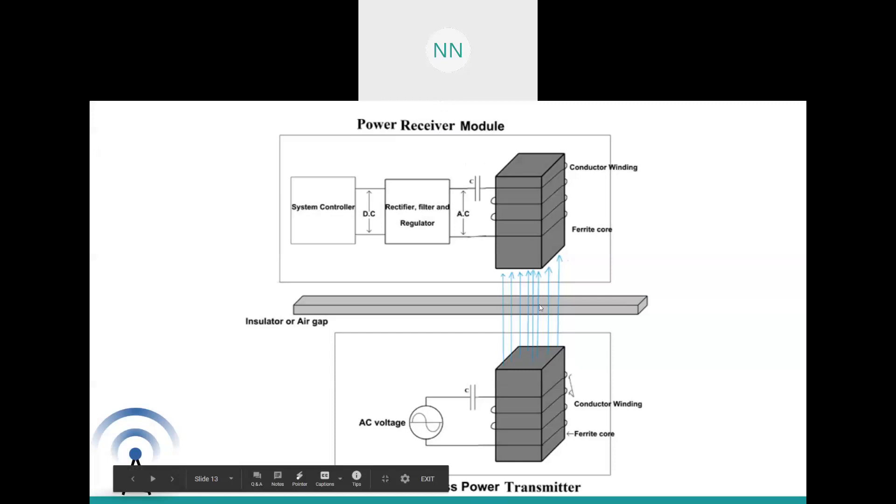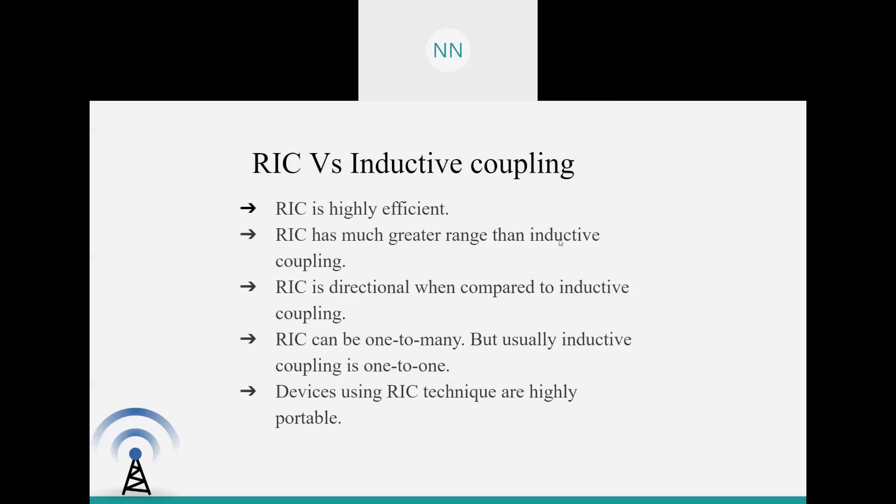This is a basic block diagram of resonant inductive coupling. This is just the same as inductive coupling, but the only difference you can see here is you have a capacitor in parallel to the coil. The working is also just the same, but the only factor that comes into consideration is that there should be tuning in between the transmitter and the receiver session, and they should have impedance matching. Now, we can go for a comparison. RIC is a highly efficient technique as compared to inductive coupling. RIC has much greater range than inductive coupling. It is more directional and can be used for one to many transfer of power. But inductive coupling is just one to one as in our mobile chargers. Now, the devices using RIC technique are highly portable.